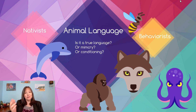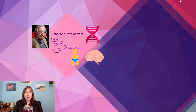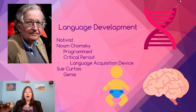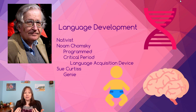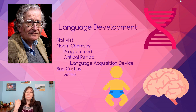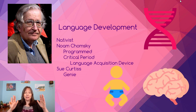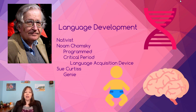Because of that, we have a field divided between nativists and behaviorists arguing over whether animals have true language. Nativists, led by Noam Chomsky, argue that humans are the only species hardwired for true language — we are born designed to develop language. Within our brain we have a cognitive pathway called the language acquisition device, which is set and ready to be exposed to language, and when we are exposed it works out just fine.